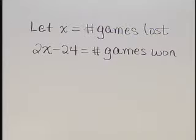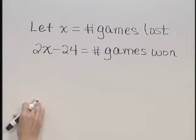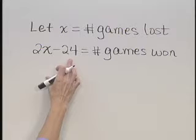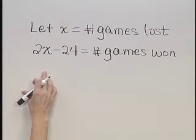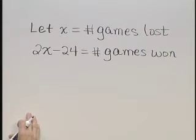Let's let X represent the number of games that they lost. And the number of games that they won is 24 less than twice that amount. So 2X minus 24 is the number of games they won.